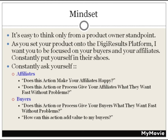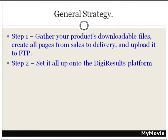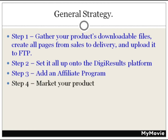Here's the general strategy. Step one: gather your product downloadable files, create all the pages from sales to delivery to thank you pages, and upload everything to your website via FTP. Step two: set everything up on the DigiResults platform. Step three: add an affiliate program — which is part of DigiResults — but I'm going to show you how to take it further and utilize the DigiResults affiliate system.